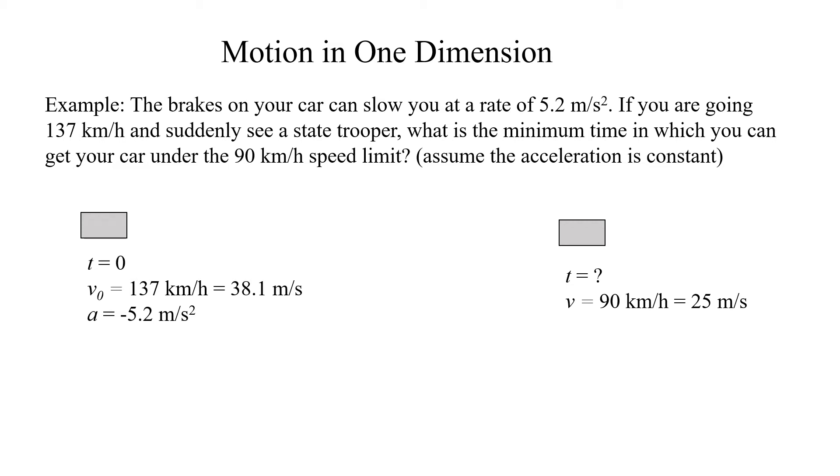If my velocity and acceleration point in the same direction, I speed up. And if my velocity and acceleration point in opposite directions, I'm slowing down. So negative acceleration does not necessarily mean I'm slowing down. Suppose I was traveling in the negative direction. My velocity would be negative. And if I slowed down, my acceleration would then be positive, even though I was slowing down.